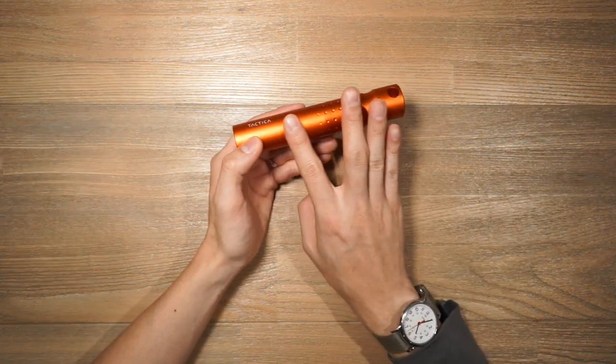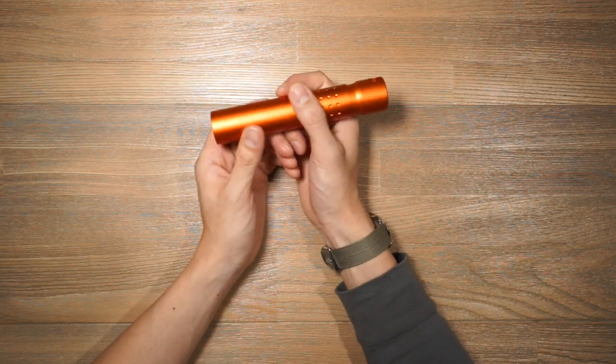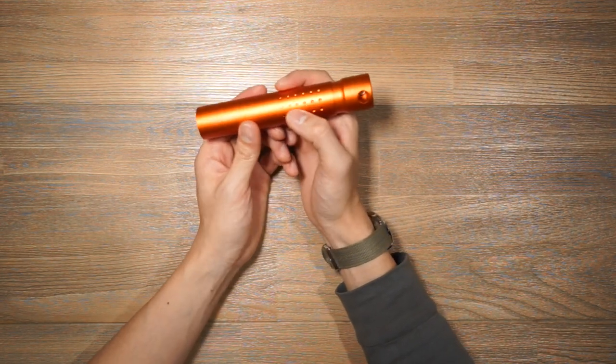First of all we have this nice smooth anodized finish but we also have these little rivets here that just add a bit of that tactile feeling when engaging with the flashlight.